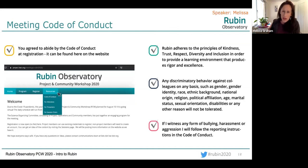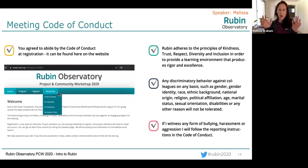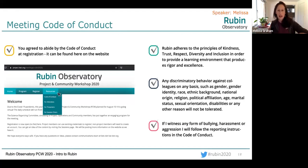This slide is to remind you that you signed the code of conduct, and that any discriminatory behavior against colleagues on any basis will not be tolerated. If you witness or experience any bullying, harassment, or aggression, there is a reporting process for that. You can find it by going to the main project and community workshop webpage and clicking on the resources menu option, where you'll find the code of conduct and the individuals to report to.